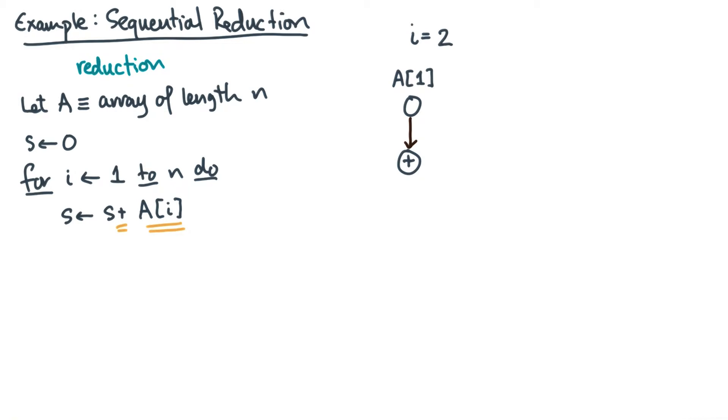Now, what about the second iteration? We'll repeat the process, so there'll be a node for A sub two and a corresponding addition. Now in this case, there will be two dependence edges: one from A sub two to the plus, and the other one from the other plus.